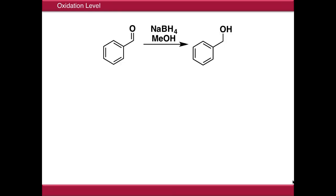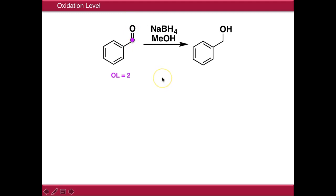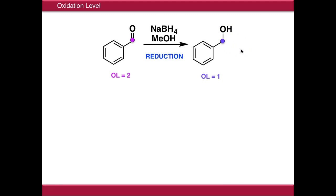Let's see an example in action. This is a reaction of benzaldehyde going to benzyl alcohol. If we look at the reacting carbon atom, its oxidation level is two — it's in the ketone oxidation level because it's forming two bonds to oxygen, which is more electronegative than carbon. In the product, that equivalent atom is only forming one bond to an electronegative atom, so the oxidation level has dropped to one. Since this is a drop in oxidation level, this is a reduction.